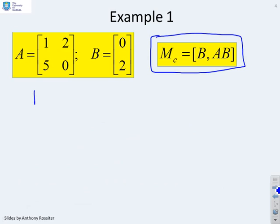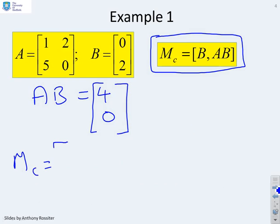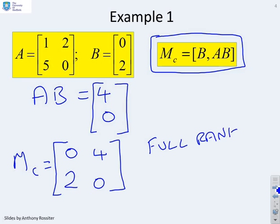Well, here, AB is clearly given by 4 and 0. So now, I can find MC, which is BAB, so it's going to be 0, 2, 4, 0, and this is clearly full rank. Because it's got this diagonal structure, I can see that without doing any calculations.